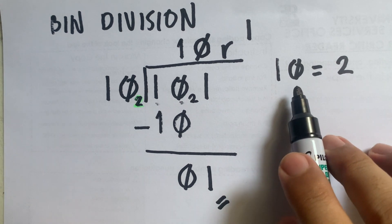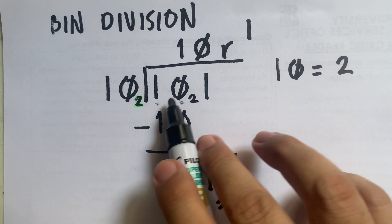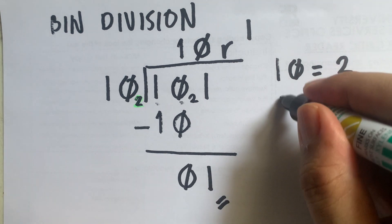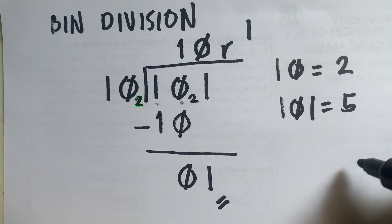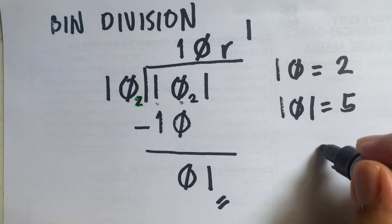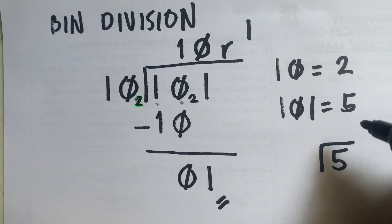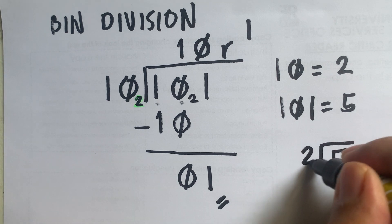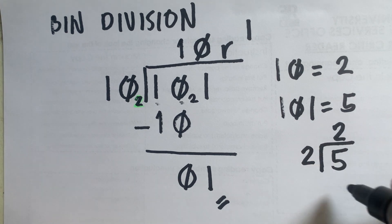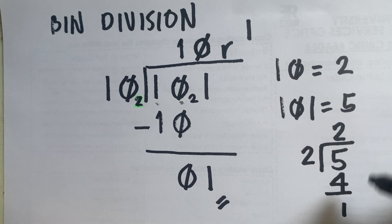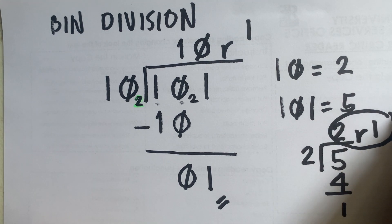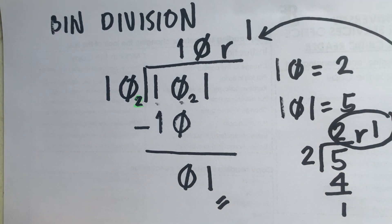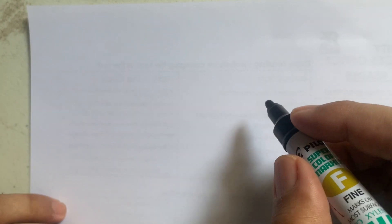To verify: 101 in decimal is 5, and our divisor 10 is 2. So we are dividing 5 by 2, which gives 2 remainder 1. This matches our binary answer of 10 remainder 1. Our answer is correct.